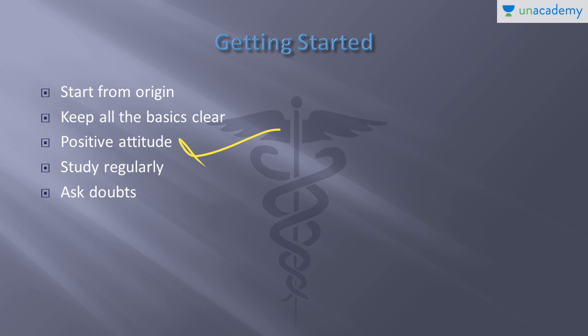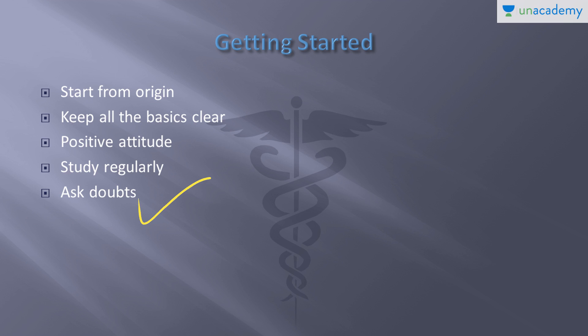Keep a positive attitude. Even if you are an average or below-average student, don't worry — biology is very easy. You can easily score 330-plus marks in NEET and 50-plus in AIIMS just by studying regularly. Always ask your doubts and don't leave anything unclear. Clear each and everything before you close it. Thank you.